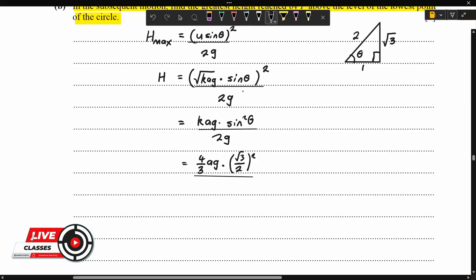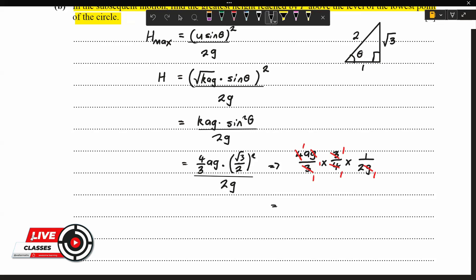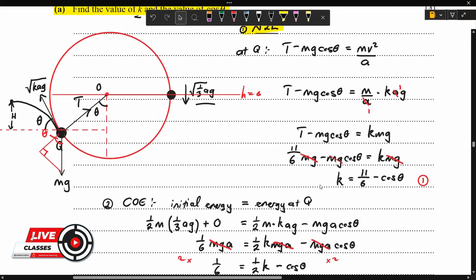Substituting: H equals (4/3)AG times (3/4) divided by 2G. The 4s cancel, the 3s cancel, and the Gs cancel, leaving H equals A/2. So the maximum height above Q is A/2.